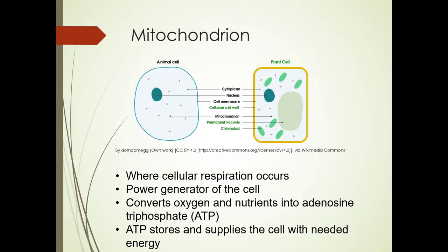And then mitochondrion. This is where cellular respiration occurs. It's the power generator of the cell. It converts oxygen and nutrients to ATP. ATP stores and supplies the cell with needed energy. And again, we will get much more into this. This is just talking about the structures.